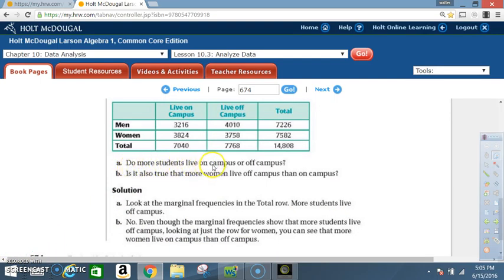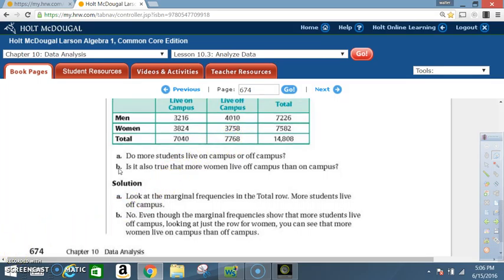Do more students live on campus or off campus? Solution. Look at the marginal frequencies in the total row. More students live off campus. So in other words look here and here. Live on campus is 7040. Living off campus is 7768.